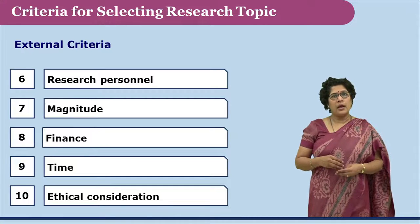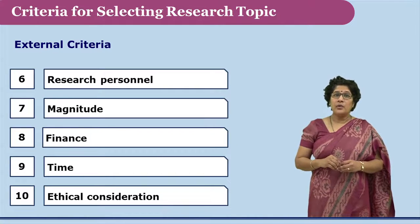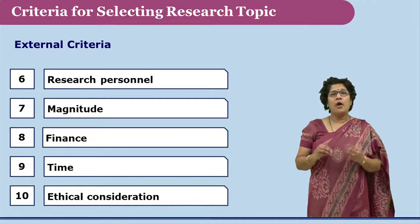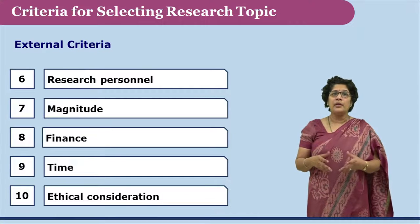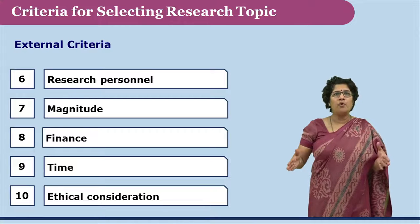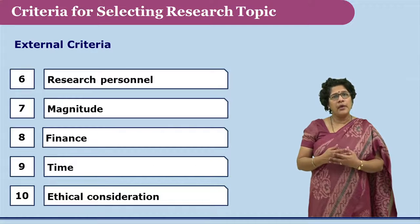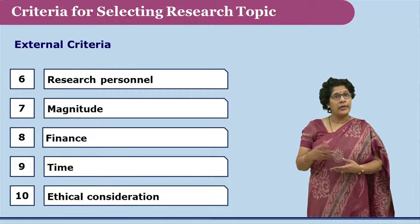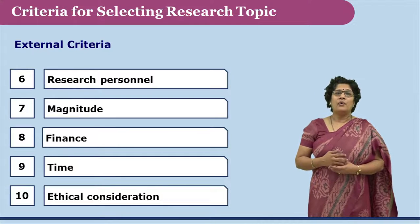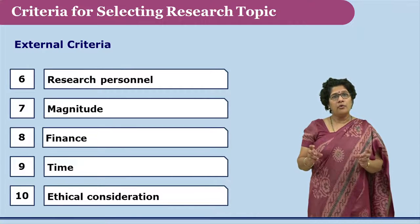Magnitude of the research is another aspect where especially novice researchers make mistakes. Since novice researchers are not aware of the depth of a study and how much work goes into research, they often take up research with a very vast scope without considering the available timeline. Many a times one ends up asking them whether they are attempting to get a doctoral degree at the master's stage itself.